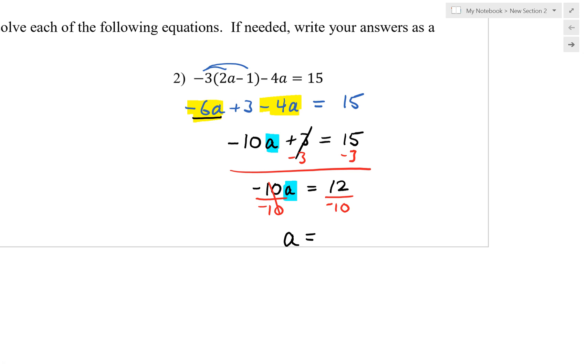As we look at the right-hand side, we have a fraction of 12 divided by negative 10, or 12 over negative 10. We want to reduce. A positive divided by a negative is always a negative. And then 12 and 10 are divisible by 2. So we're going to reduce by dividing each term by 2 and get a final answer of negative 6 fifths.